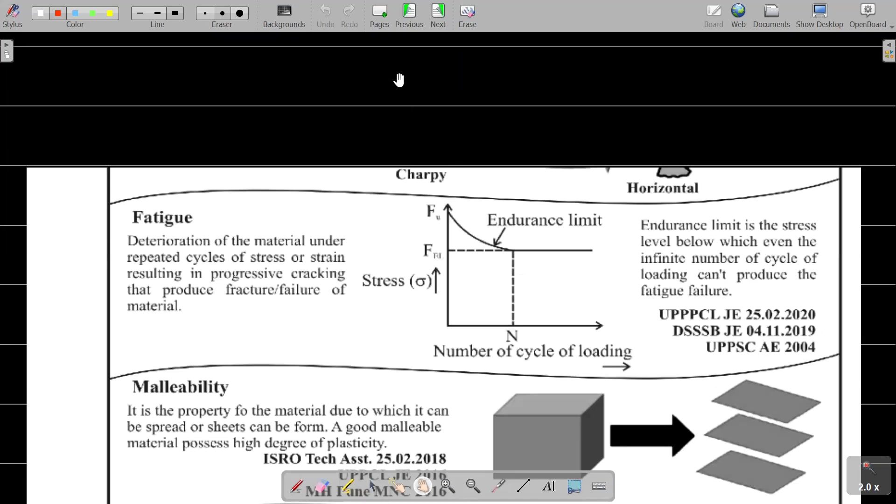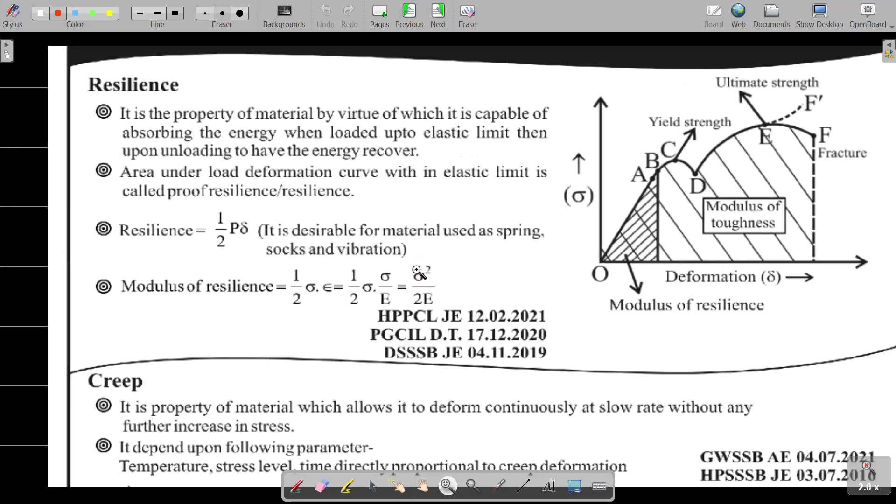Resilience is the property of material by which it is capable of absorbing energy when loaded up to elastic limit, and upon unloading the energy is recovered. Area under load deformation curve within the elastic limit is called proof resilience. Its value is half into P into delta, where P is loading and delta is deformation. Modulus of resilience is sigma squared divided by 2E, where E is modulus of elasticity.